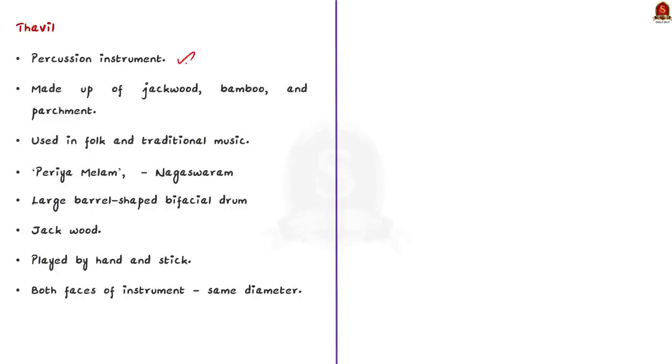Tawil is also a percussion instrument. It is also made up of jackwood, bamboo and parchment. While Mridangam is used in Carnatic music, Tawil is majorly used in folk and traditional music. It is particularly used in instrumental ensemble called Periyam Elam. It is mostly used along with Nadaswaram, which is a double reed music instrument. Compared to Mridangam, the barrel used in Tawil is larger.